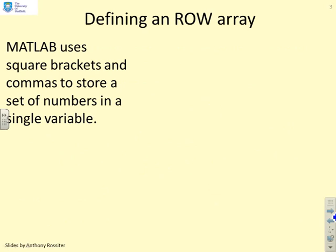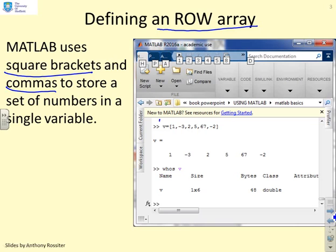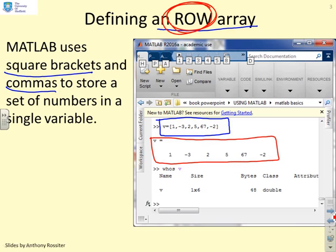First we need to know what the notation is. We're going to start by looking at row arrays. MATLAB uses square brackets and commas to store a set of numbers in a single variable on a row. Here's the MATLAB command: V equals square brackets 1 comma minus 3 comma 2 comma 5 comma 67 comma minus 2. The commas tell MATLAB I'm dealing with a row, and MATLAB has now put all these values into a single variable name V.